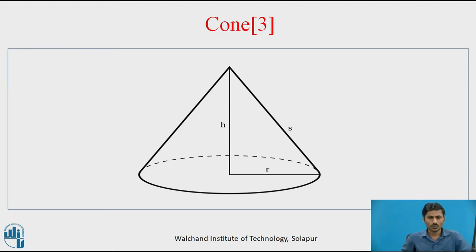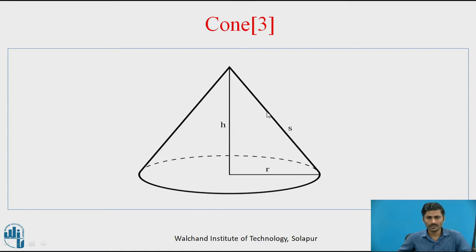This is a diagram showing how the cone looks. In this cone, the base is a right circle having a radius small r, and it has an axis height or cone height with notation h. The true length of the generator — that is, the outer surface of the cone — has this much length. This is the right circular cone 2D diagram.